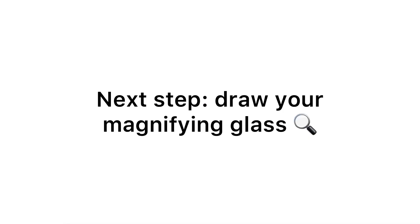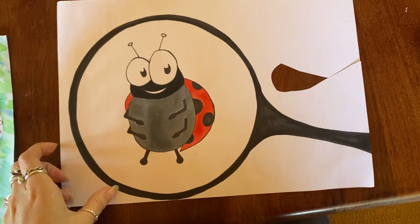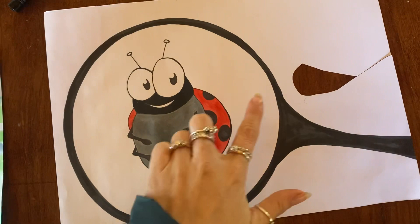Next step: draw your magnifying glass. This is my bug and I have now drawn my magnifying glass. Remember, a magnifying glass is a circle and then you're going to have to add a handle in as well.